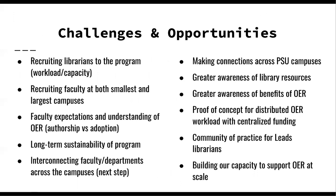As part of making this model adaptable, we want to share the challenges and opportunities we've discovered for others to consider. Our first challenges were around recruiting. Getting enough librarians with the capacity for additional workload was difficult, but we had an even harder time getting faculty to sign on. Interestingly, that didn't appear related directly to campus size. Both our smallest campuses and our largest campus, University Park, had difficulty recruiting more than one or two faculty members, while other campuses recruited between five and nine. We also had challenges with faculty who wanted to do an authorship project rather than an adoption project, which was outside our ability to support within this program.